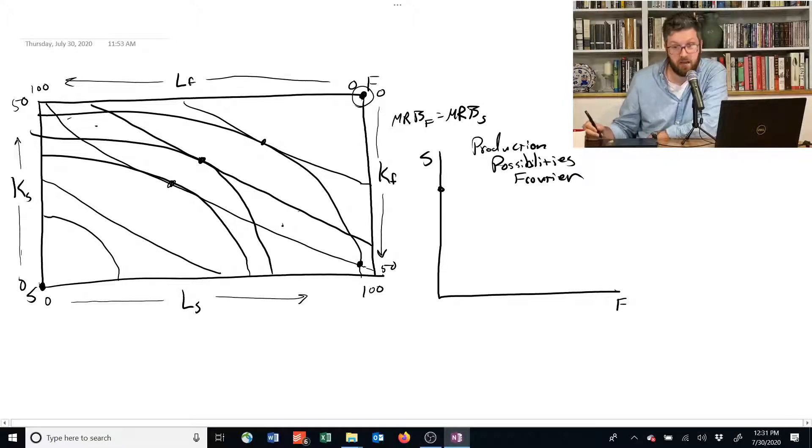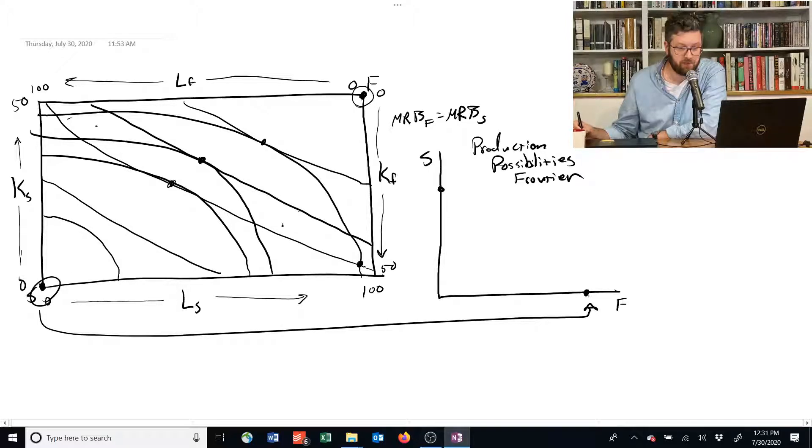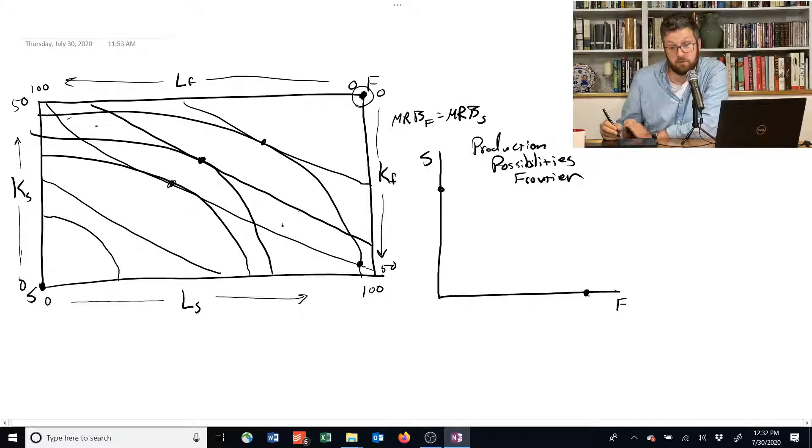Conversely, if we allocated everything towards food, maybe there's some level over here that we could make that would correspond to this point of the Edgeworth box. There are also points in the middle.